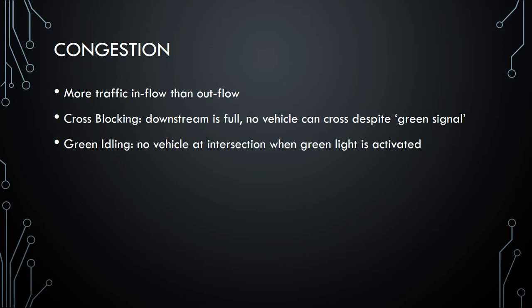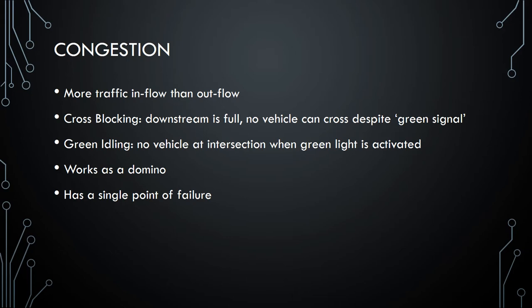Green idling occurs when no vehicle is at the intersection when the green light is activated. This condition works as a domino and as a single point of failure — when we have congestion in a certain intersection we can be sure that the condition will spread over to all of the neighboring intersections.